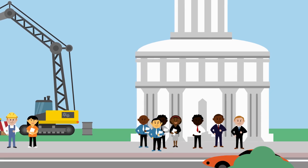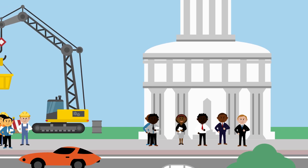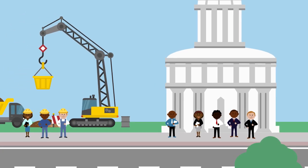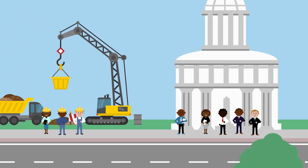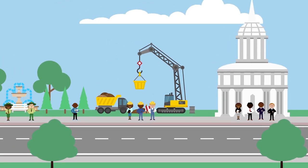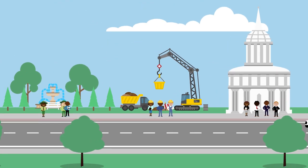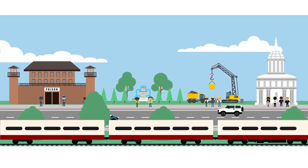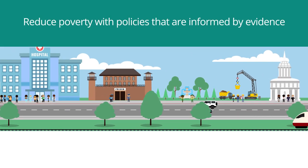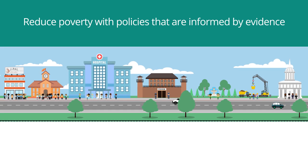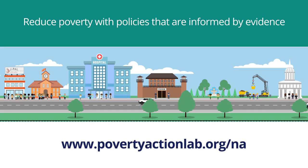When properly implemented, randomized controlled trials provide accurate and credible estimates of the impact of a program. This allows policymakers and program directors to roll out and scale up the most effective programs, and helps us reduce poverty with policies that are informed by evidence. To learn more about J-PAL North America, visit our website.